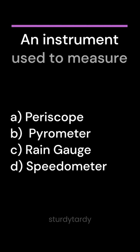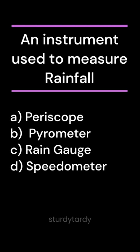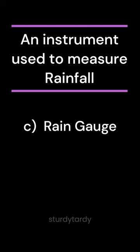Answer: A. Audiometer. An instrument used to measure rainfall. A. Periscope. B. Pyrometer. C. Rain gauge. D. Speedometer.